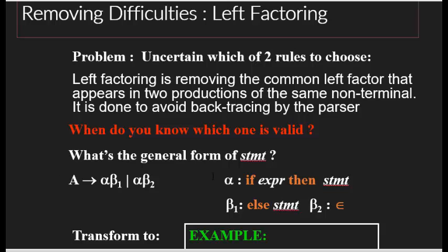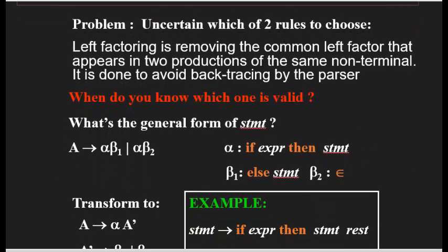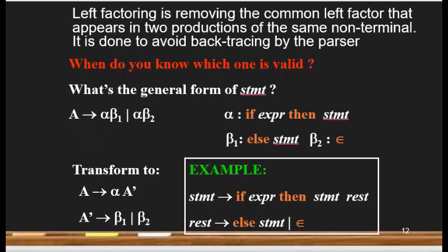The common left factor could appear in two, three, or more productions. You transform it into: A goes to alpha A-prime. Alpha is always the common leftmost symbol across the productions, and in A-prime you put the remaining parts — everything after the alpha — in an alternation format.